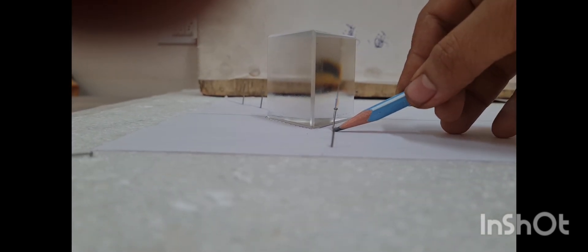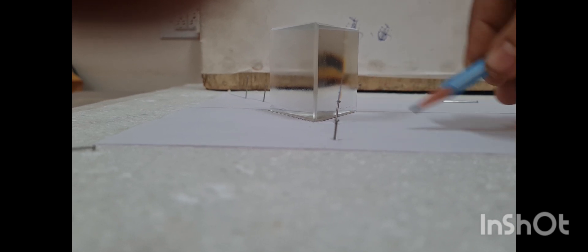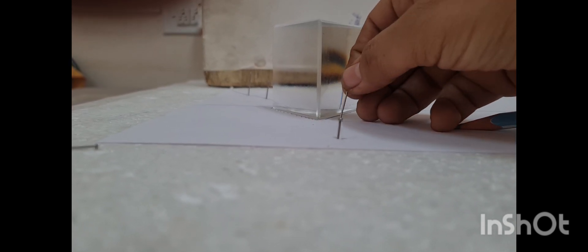It means we have traced the emergent ray on the paper. Mark the final position of the pins and then remove these pins. Remove the prism and join these two marked points to get the emergent ray on the paper.